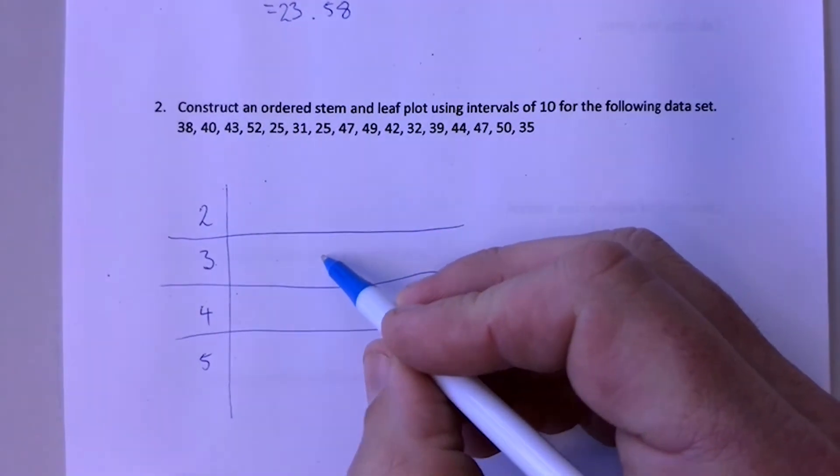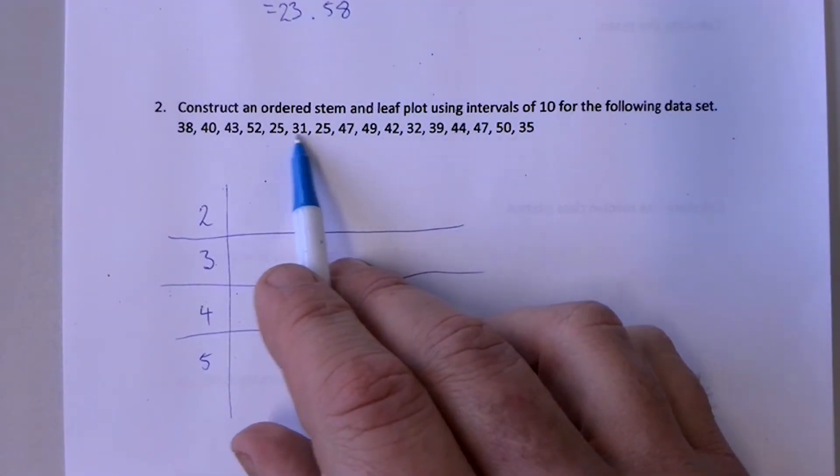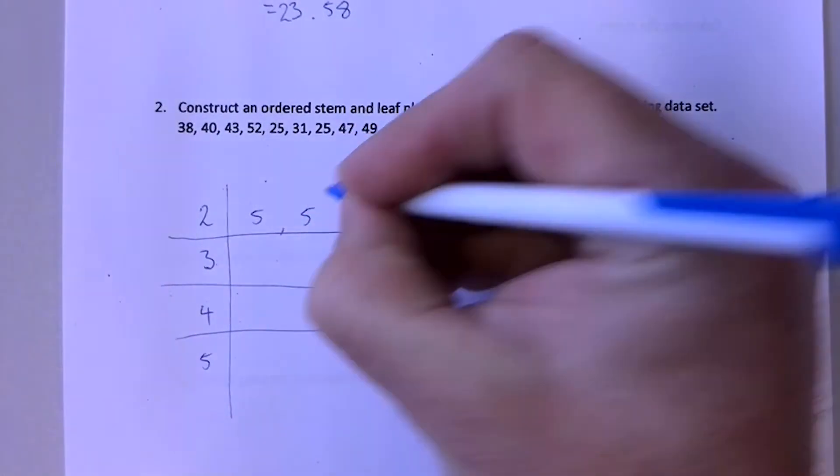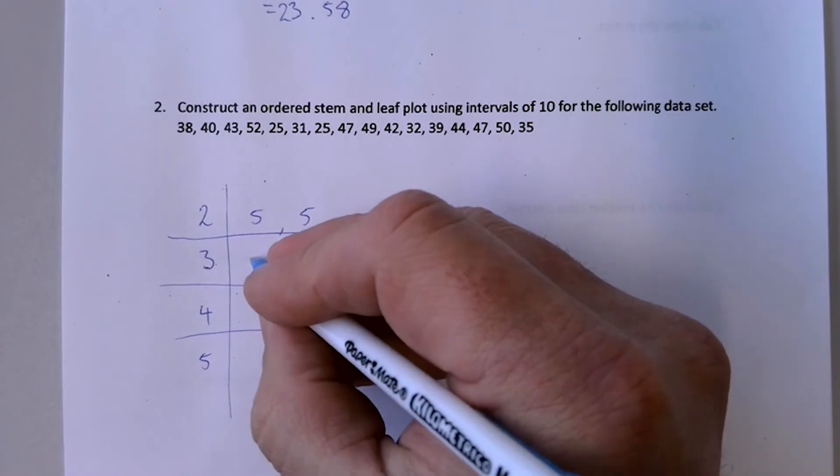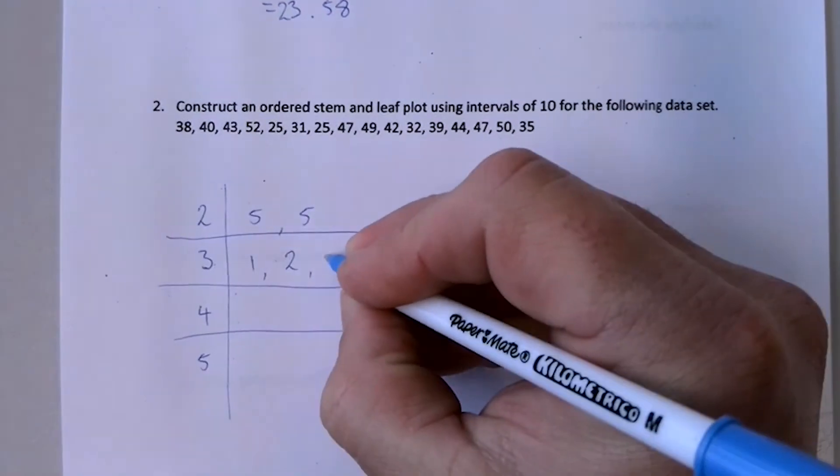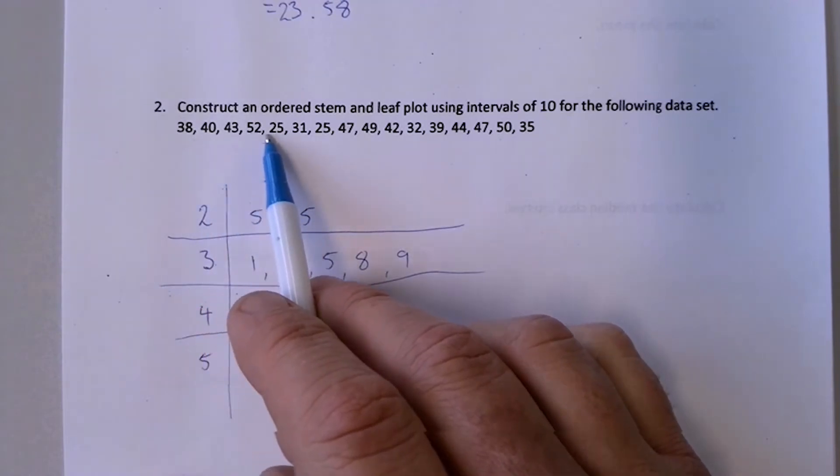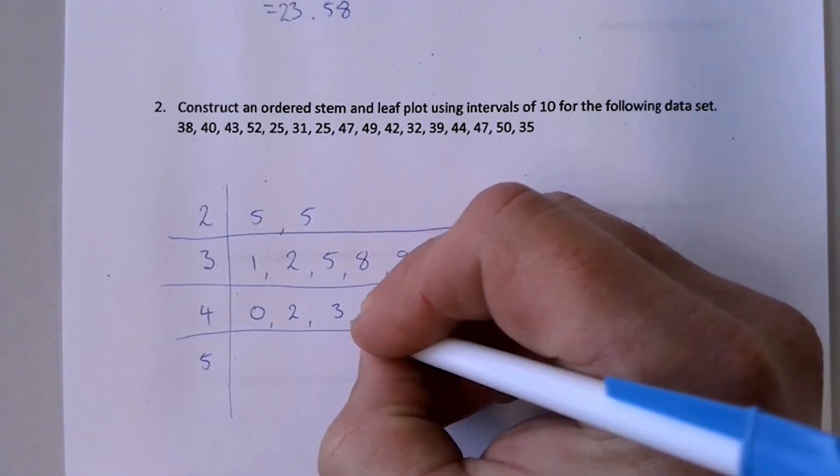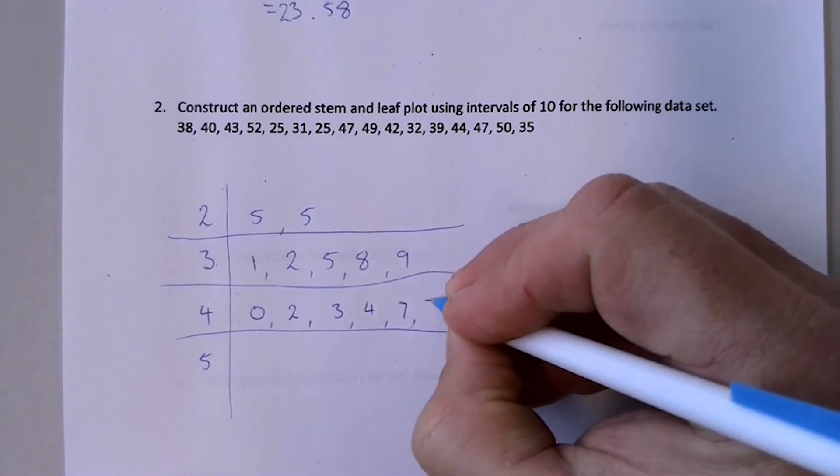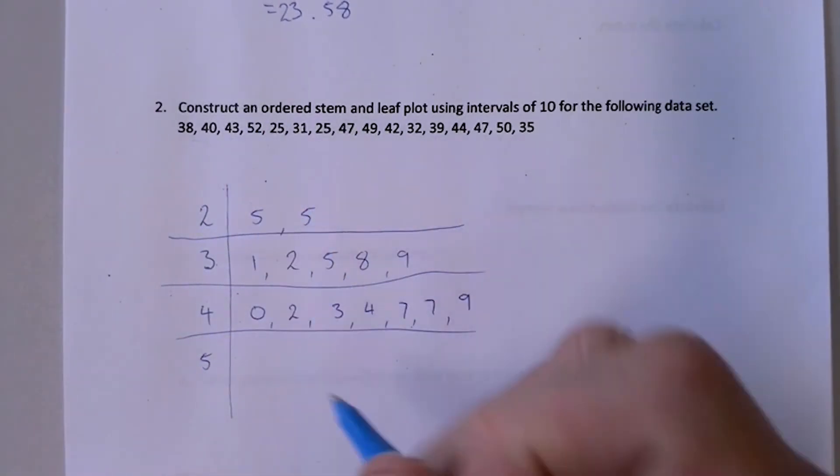And this side of the stem and leaf plot is for the ones. So if you go through and you find your 20s, you've got two 25s in there. And then in your 30s, scan through and write them as you find them. So I've got 31, I've got a 32, I've got a 35, I've got a 38, and I've got a 39. And then in my 40s, if I scan through, I've got a 40, I've got a 42, I have a 43, I have a 44, I have a 47, another 47, and a 49. And then in my 50s, I've got a 50 and a 52. And then I'm just going to double check. 1, 2, 3, 4, 5, 6, 7, 8, 9, 10, 11, 12, 13, 14, 15, 16.